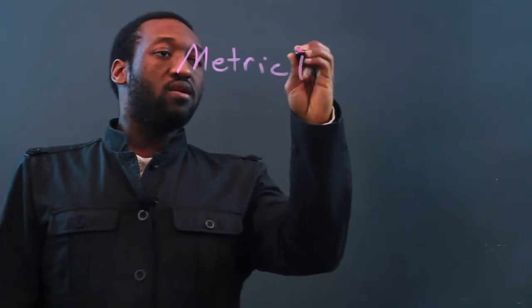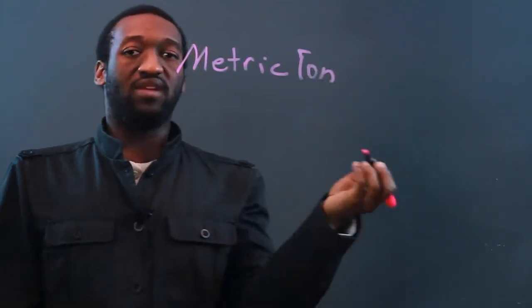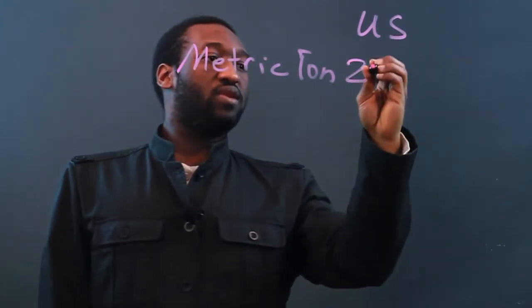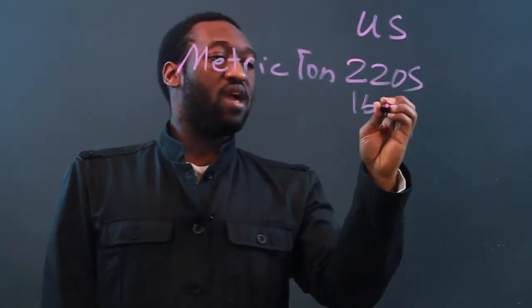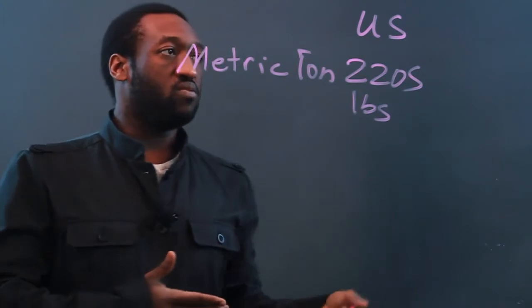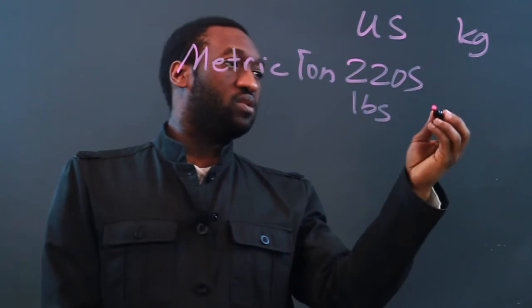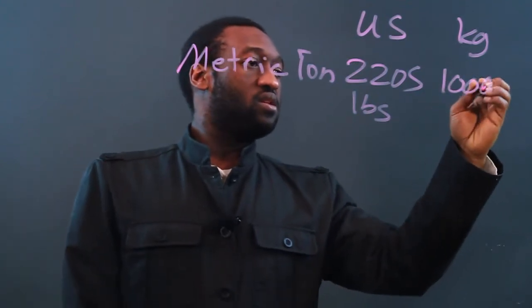Now let's look at both of these. The metric ton is a measure of weight. So in the U.S., the metric ton is 2,205 pounds. In the metric system, we'll use kilograms as our unit of weight, and that's going to be 1,000 kilograms.